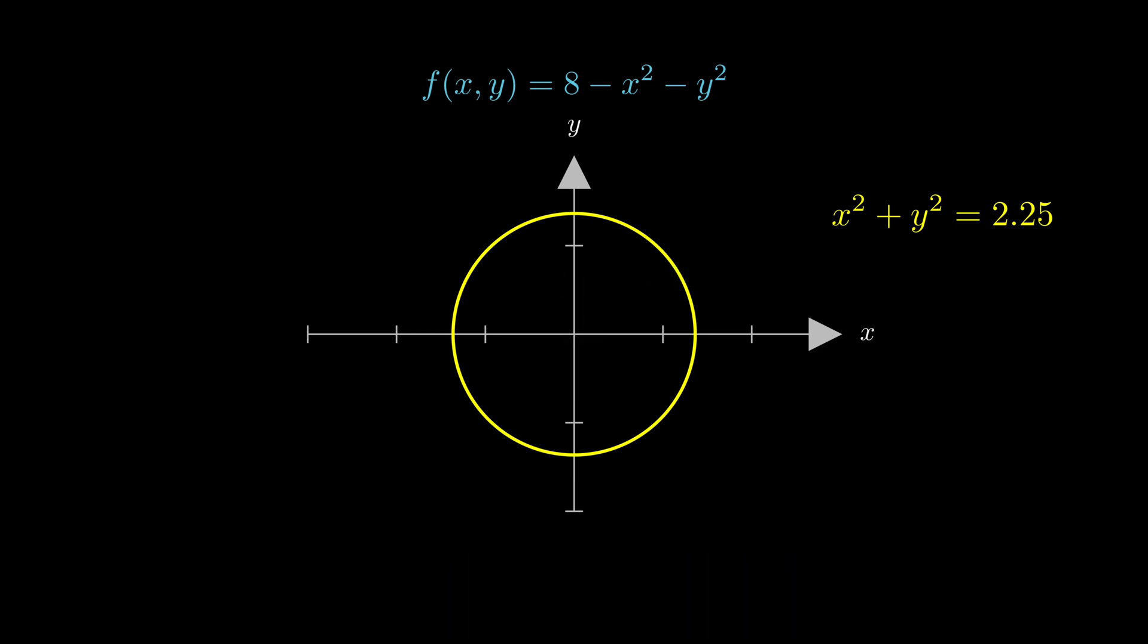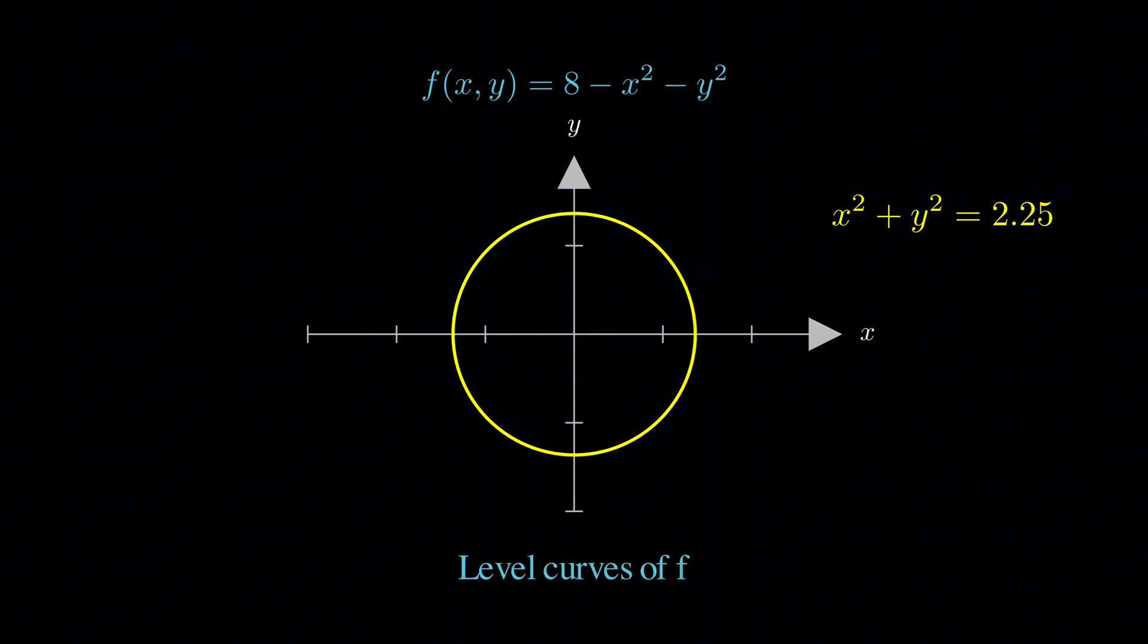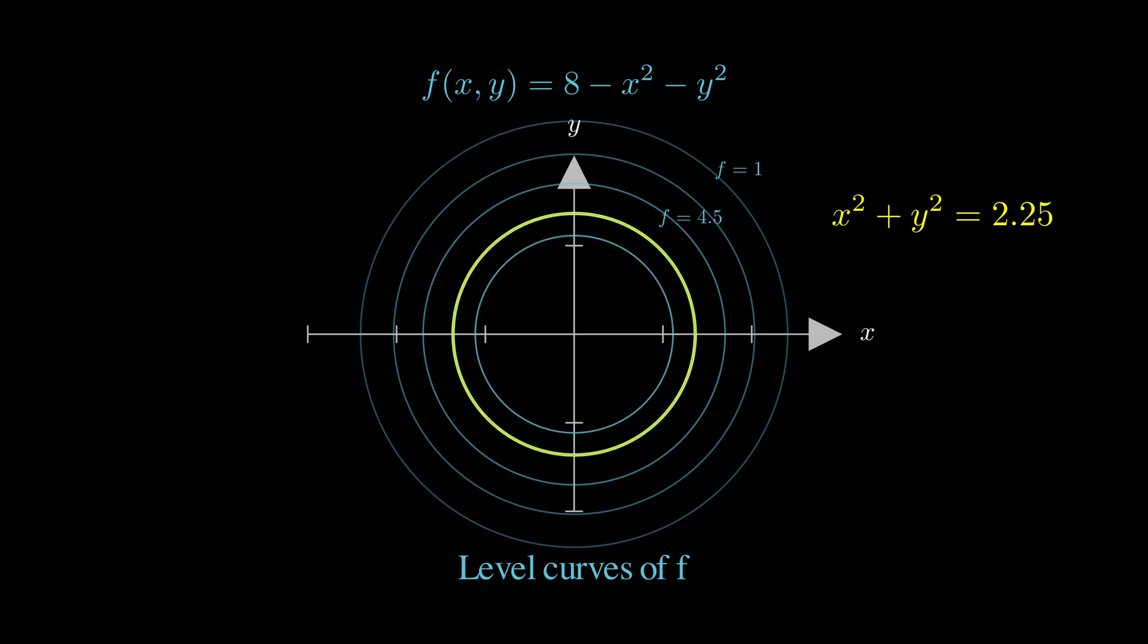Here's where the magic happens. Let me show you the level curves of our function. These blue circles represent points where the function has constant values with f equals 1, f equals 3, and so on.